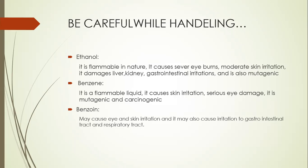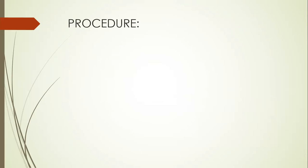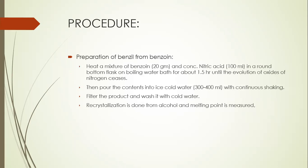As we have seen earlier, the procedure involves two steps. The first step is the preparation of benzyl from benzoin. For the synthesis of benzyl from benzoin, benzoin and concentrated nitric acid are taken in a round bottom flask and heated on a water bath for one and a half hours. Then ice cold water is added to obtain the precipitates of benzyl, which are recrystallized using ethanol.